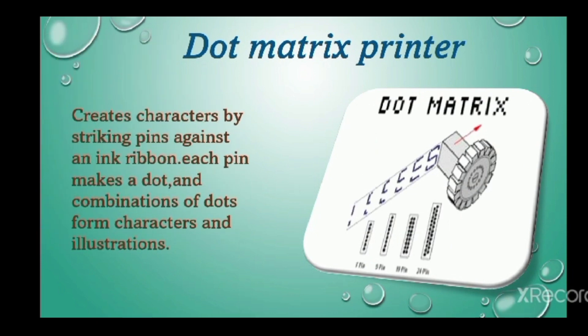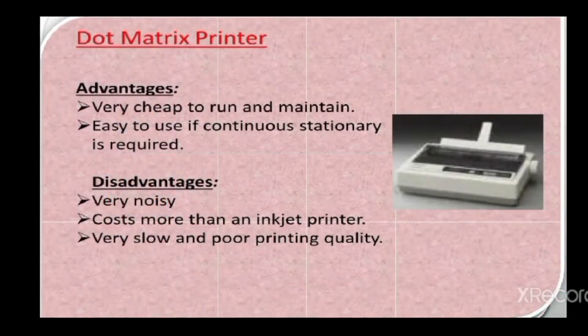The dot matrix printer is an impact printer. It creates characters by striking pins against an ink ribbon. Each pin makes a dot, and a combination of dots forms characters and illustrations. Dot matrix printer is very cheap and easy to use, but it is very noisy and very slow.